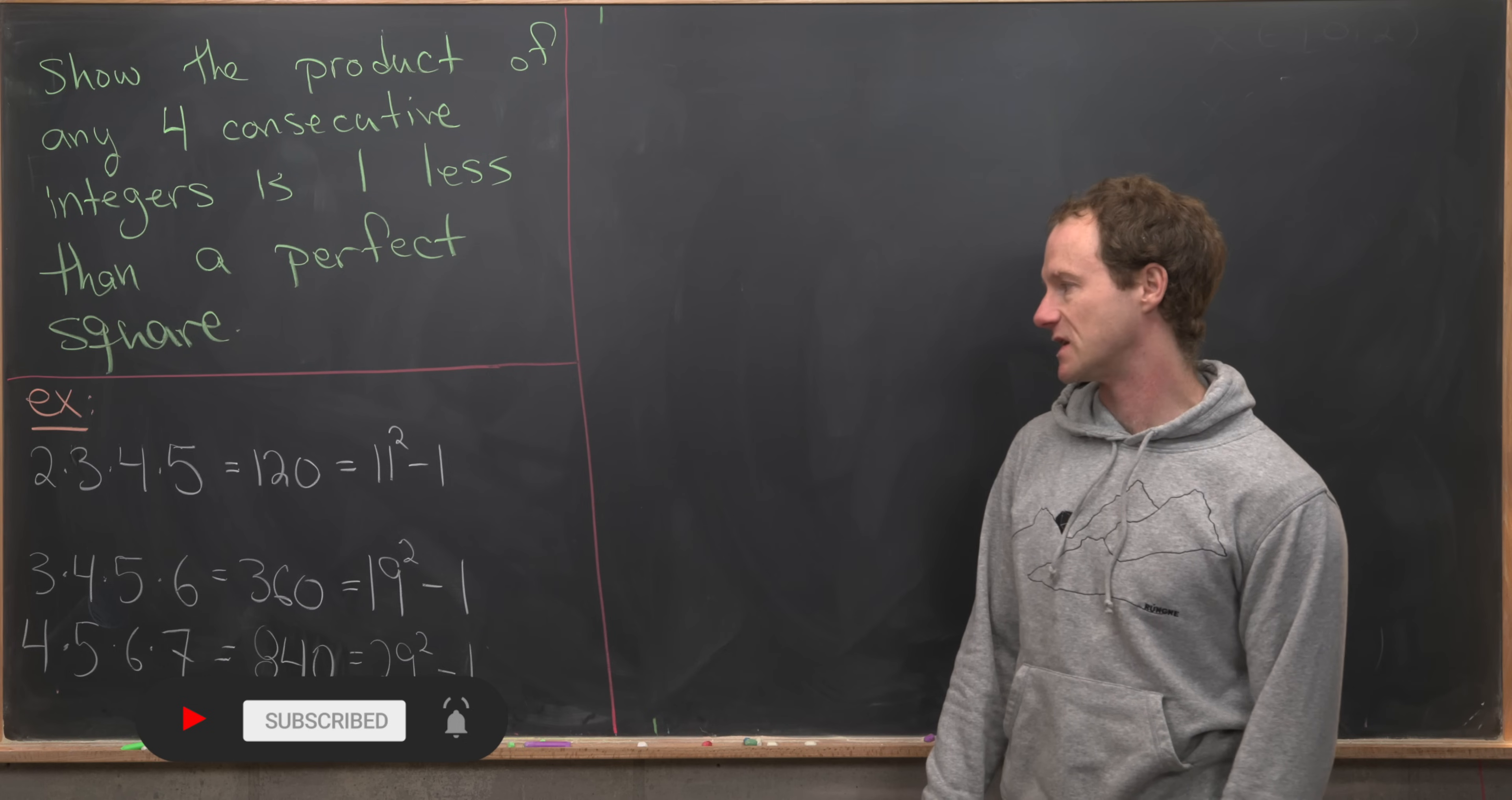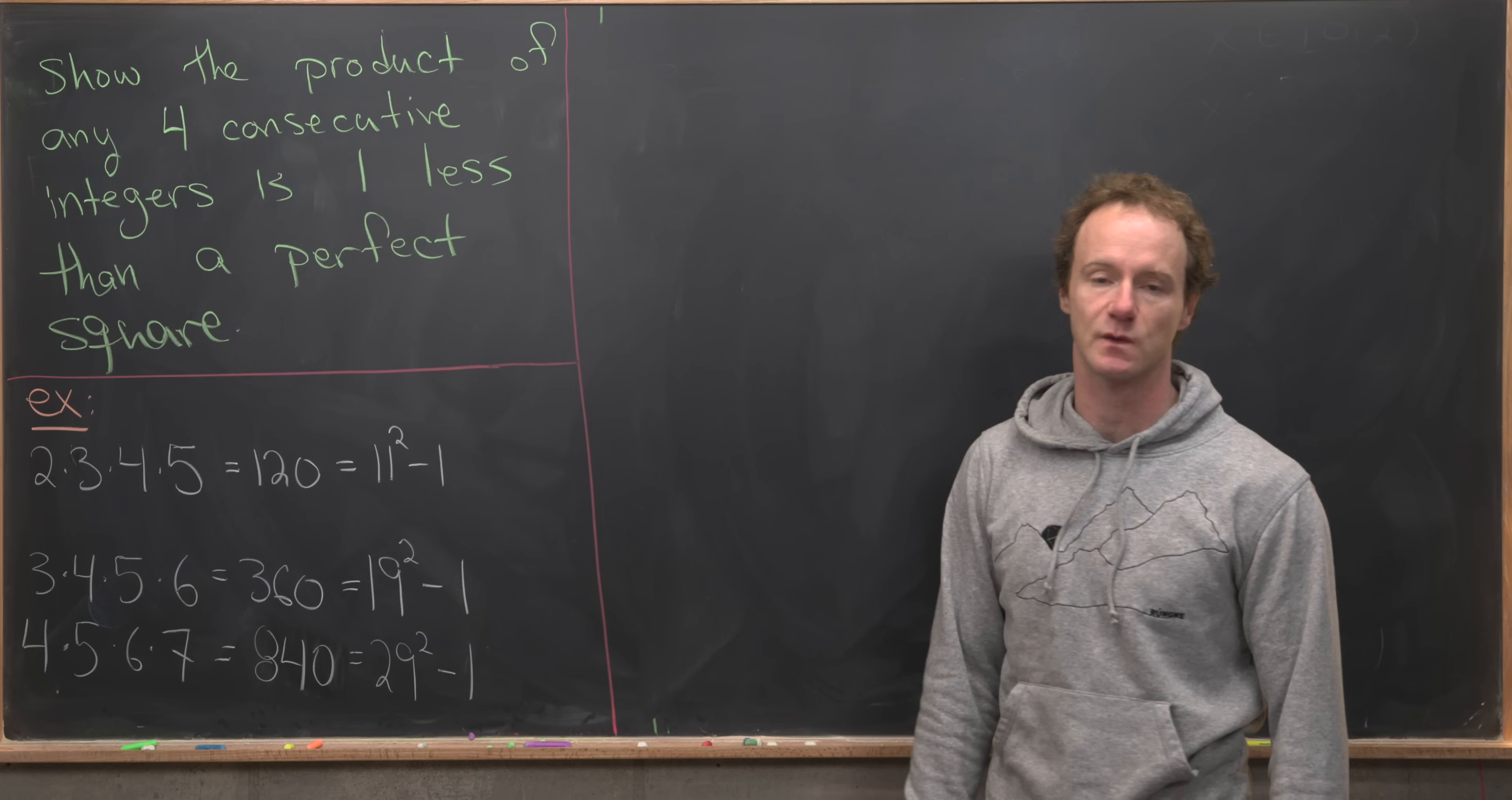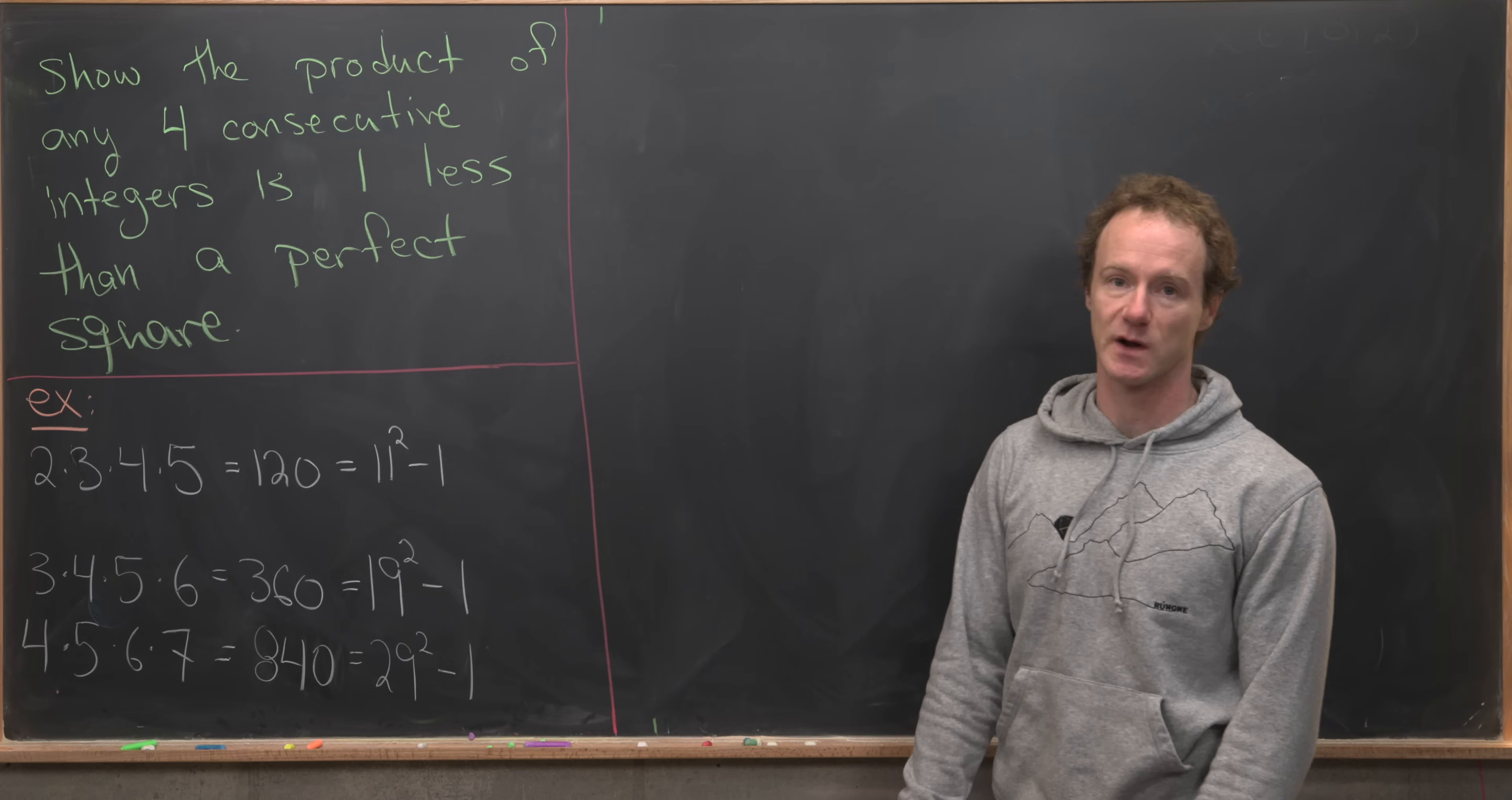So I've cooked up a couple of examples here. Notice that 2 times 3 times 4 times 5 is 120, that's 11 squared minus 1. 3 times 4 times 5 times 6 is 360, which is 19 squared minus 1.